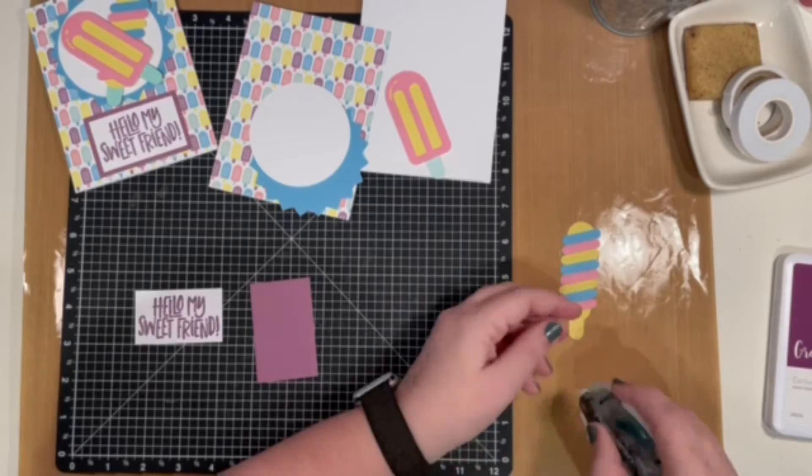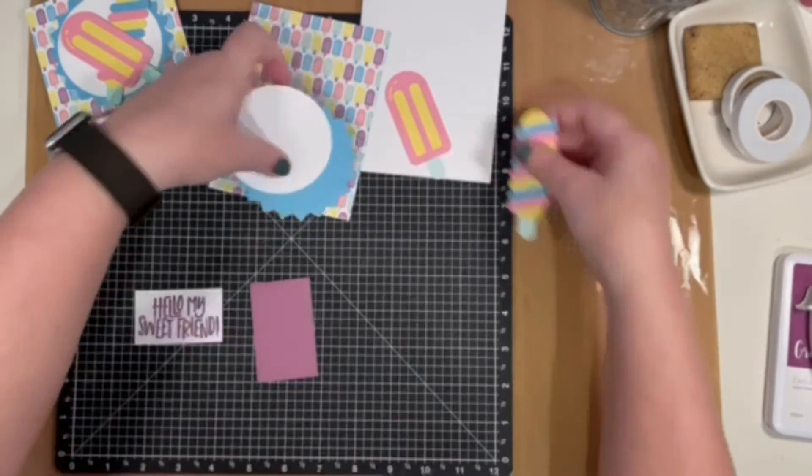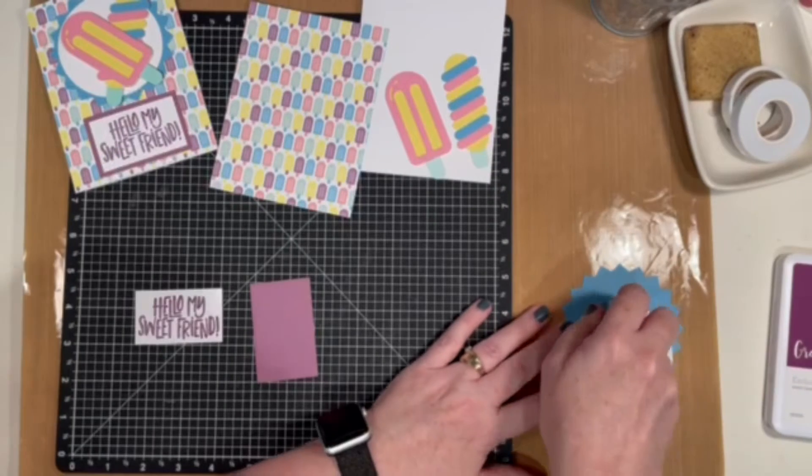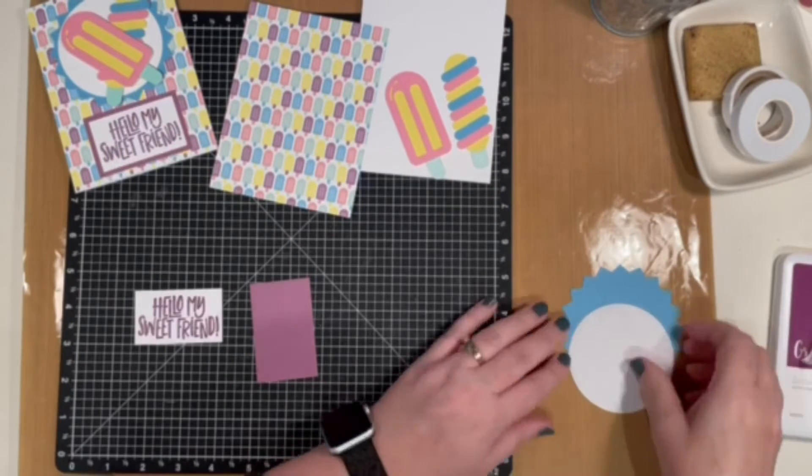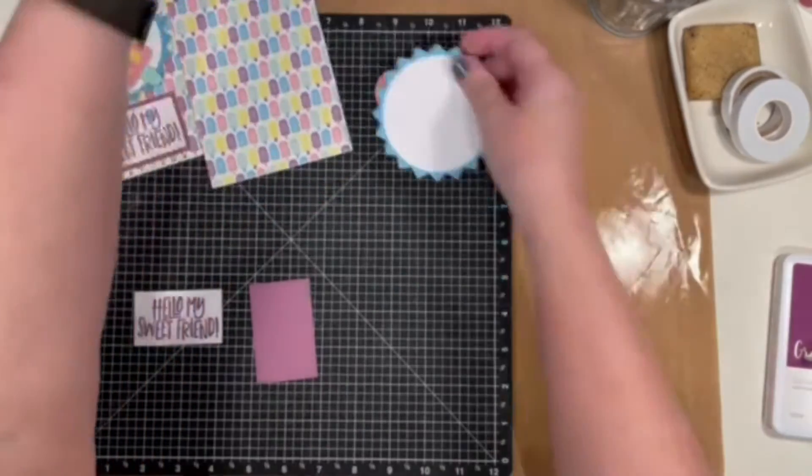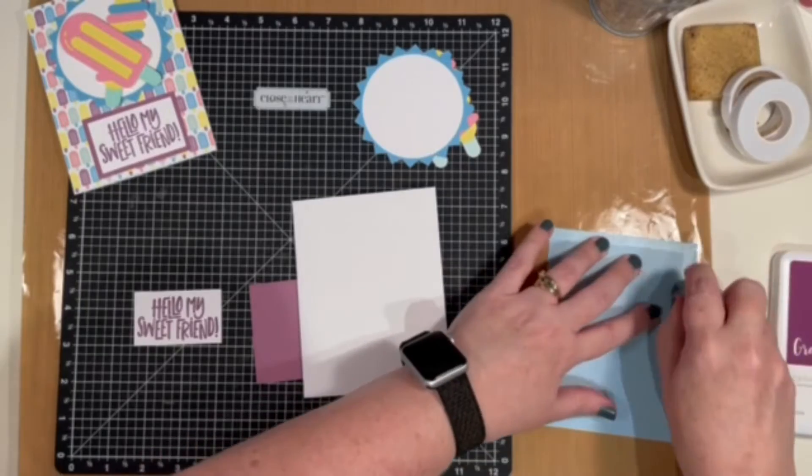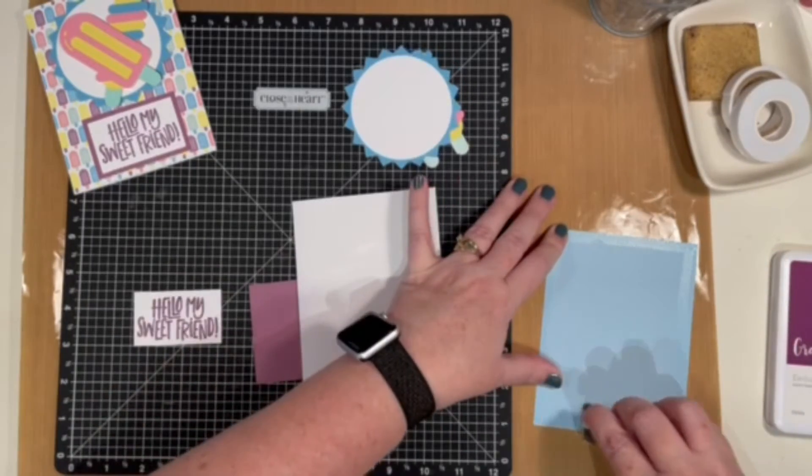Get that final popsicle stick piece on, and we're going to start gluing the rest of the card together. This white daisy circle goes on the Capri piece, and then the background piece with all these popsicles goes on our card base.